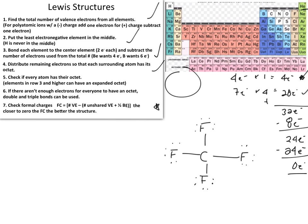So carbon has its octet. All the fluorines are bonded identically — each has a single bond and six unbonded electrons — so we can look at one fluorine as representative of all of them.